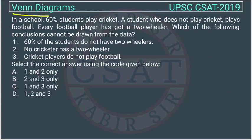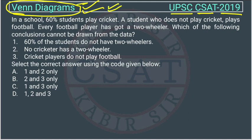This is a question of reasoning from the unit Venn diagram, asked by UPSC in their CSAT paper of 2019. In every question I tell you which unit and which chapter it is from. Knowing this is very important, because if you don't know which chapter you're studying, you won't be properly prepared. So this is very necessary.